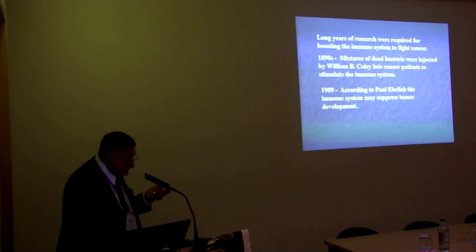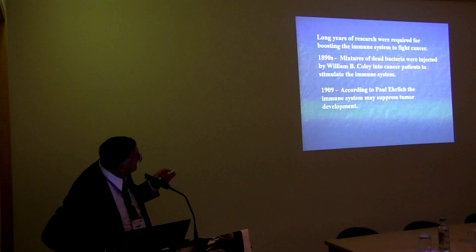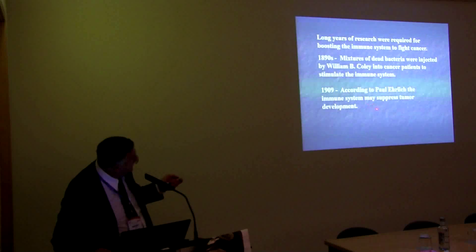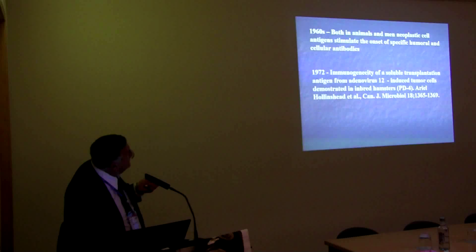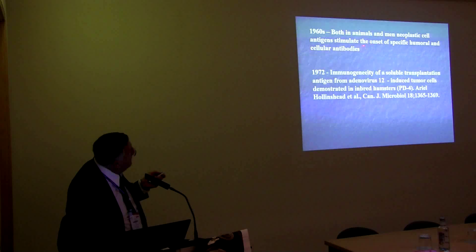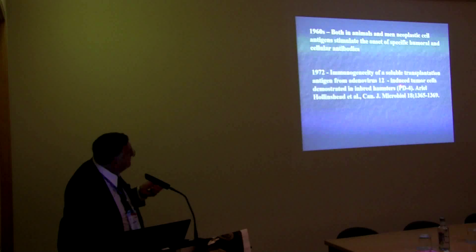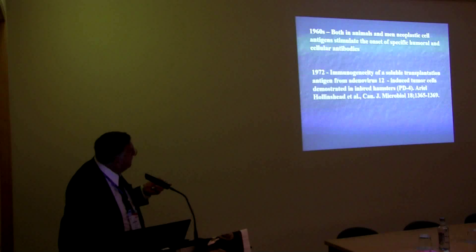Since the end of the 18th century, when William Cooley found that there was the possibility to stimulate the immune system, then the great Paul Ehrlich said that the immune system may suppress tumor development. After many years, there was the hypothesis that animals and men have transformed cells that could stimulate specific tumor cellular antibodies. Immunogenesis of a sub-transplantation antigen from SV40 virus-12 induced tumor cells; Halogen and others were the first to show this kind of finding.